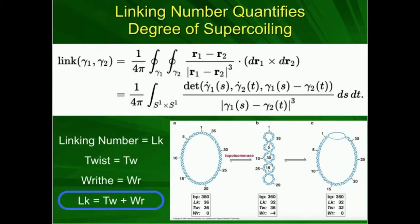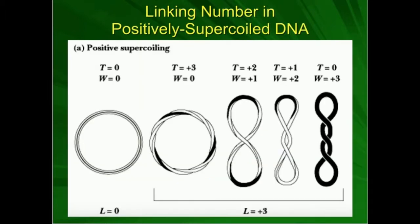These are topoisomers — they are the same DNA molecule but have different topologies or different three-dimensional structures. One is supercoiled and one is not. When looking at supercoiling, we can have positive or negative.